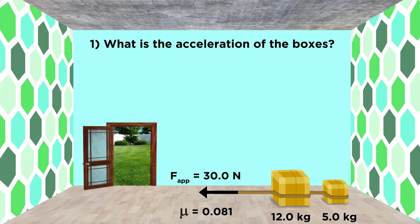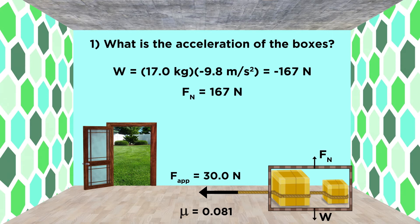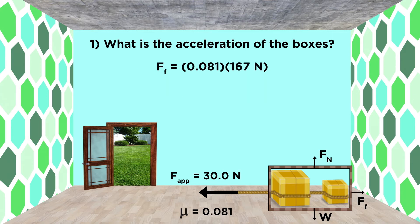The first thing we want to do is find the acceleration of the boxes. To do this, we can treat them as one system. Combining the masses of the boxes, we have a mass of seventeen kilograms. That gives us a gravitational force of one hundred sixty-seven newtons, which will also be the normal force. Then to get the force of friction, we multiply the coefficient of friction by the normal force, and that gives us thirteen point five newtons. We also have the applied force of thirty newtons.